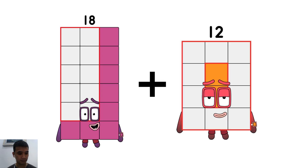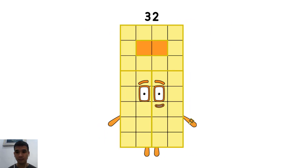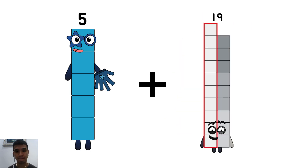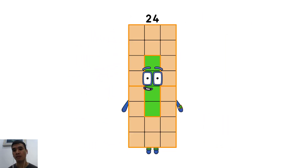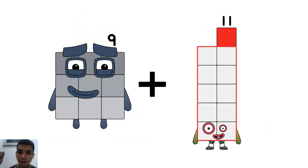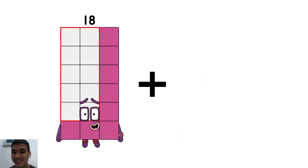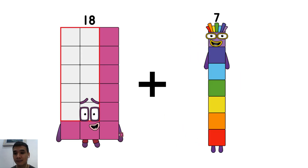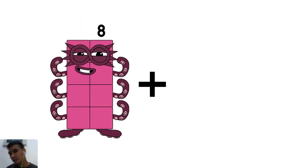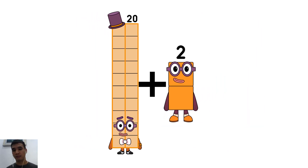18 plus 14 equals 32. 5 plus 19 equals 24. 9 plus 10 equals 19. 18 plus 20 equals 38. 20 plus 2 equals 22.